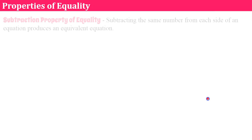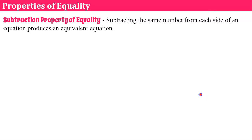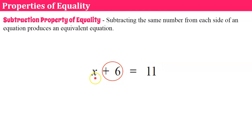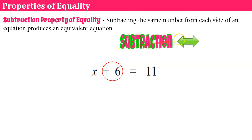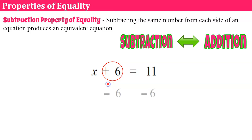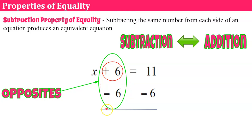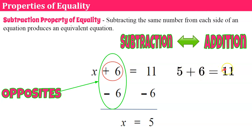Now let's talk about the subtraction property of equality. It states that subtracting the same number from each side of an equation produces an equivalent equation. Here's the equation: x plus 6 equals 11. X is being added by 6, so the inverse is to subtract 6 from both sides, giving me a zero pair and leaving x is equal to 11 minus 6, which is 5. Let's check: replacing x with 5, 5 plus 6 needs to equal 11 — and indeed 5 plus 6 is 11. It checks.